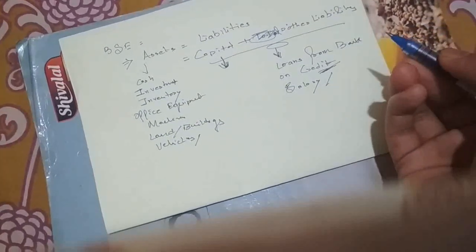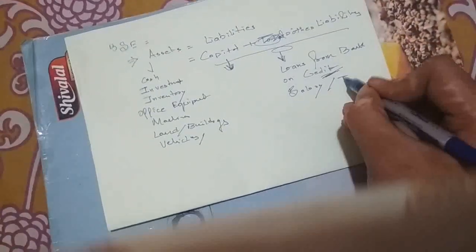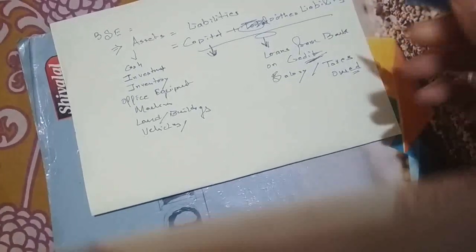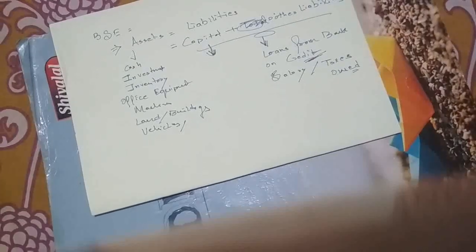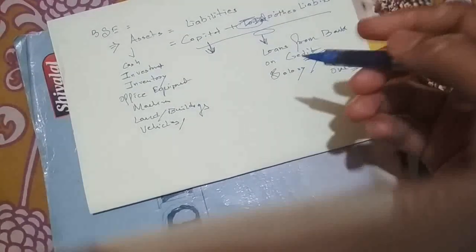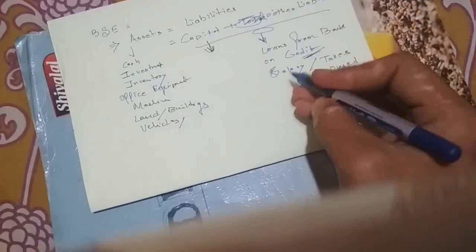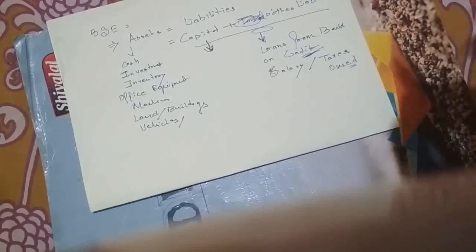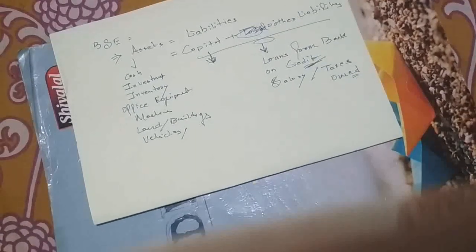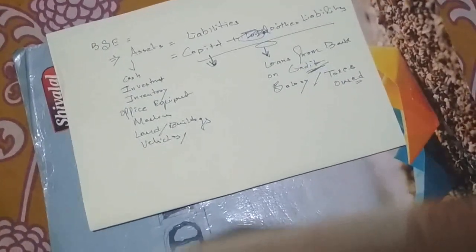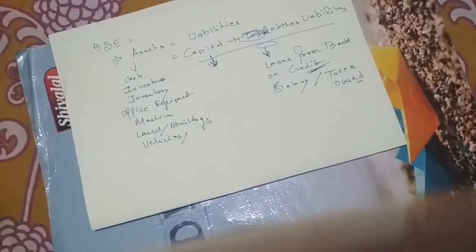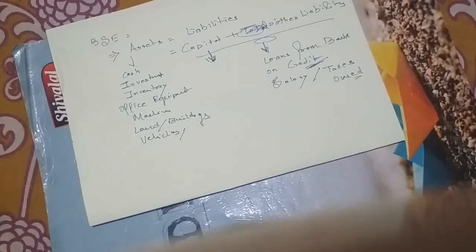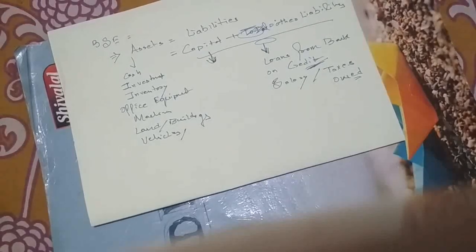Bank debt is one example. Let's say you have taken some goods or raw materials on a credit basis — in future you have to repay this money, so this also comes in other liabilities. Salaries or taxes owed — amounts you haven't paid but are required to give — come as liabilities. For example, in the recent case of BSNL, employees were not paid for three months, so when preparing the balance sheet they write the salary into the liabilities side. If a bank has paid on a monthly basis, it is written as an expense in the profit and loss account.